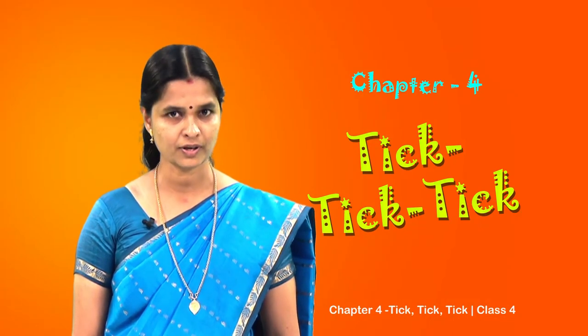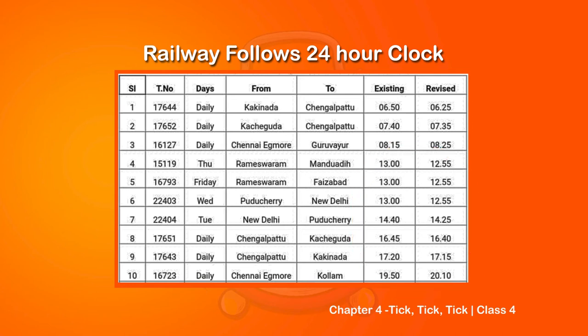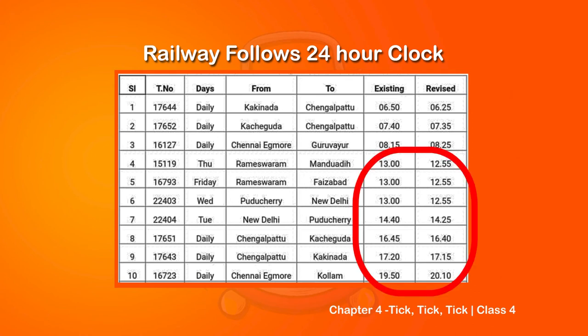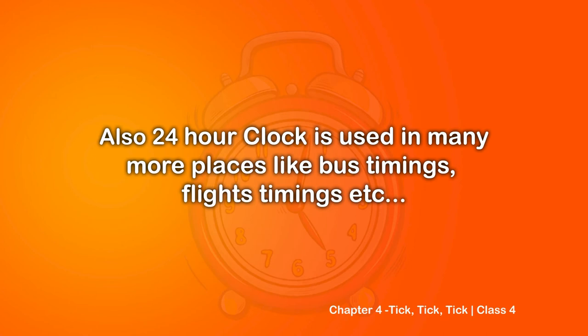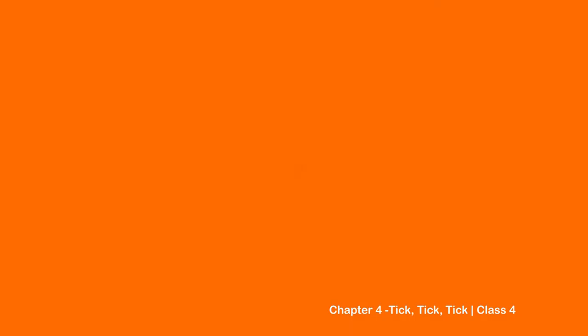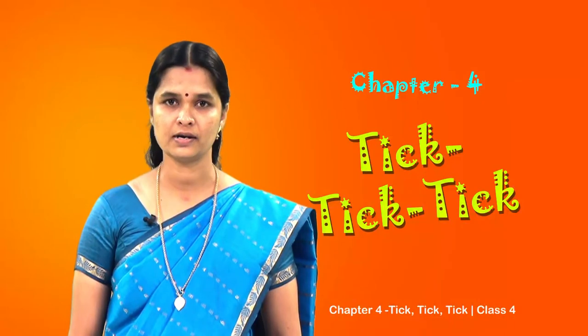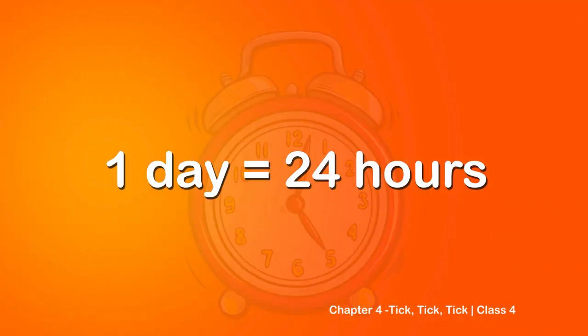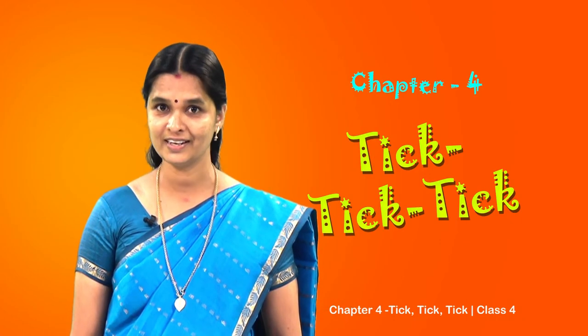Do you know what is a 24-hour clock? You can see the railway timetable here - observe how the time is written in it. It is written in 24-hour clock. So we need to study about 24-hour clock and how to convert time from 12-hour clock to 24-hour clock and back. So far what we have learned is about 12-hour clock. Before learning about 24-hour clock, let me ask you: how many hours are there in one day? Good - there are 24 hours in one day. That is why we need a 24-hour clock too.